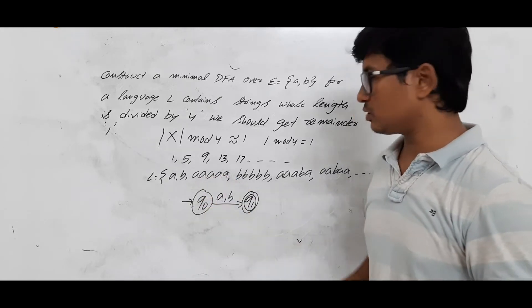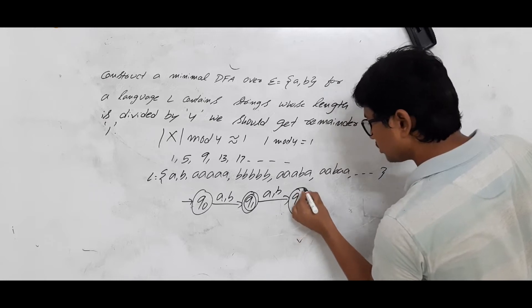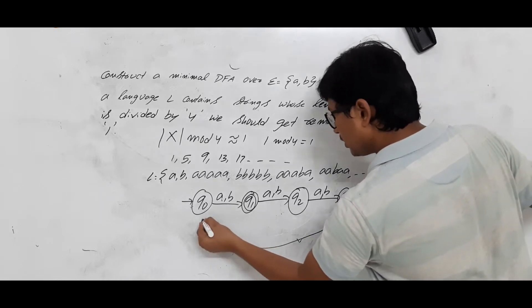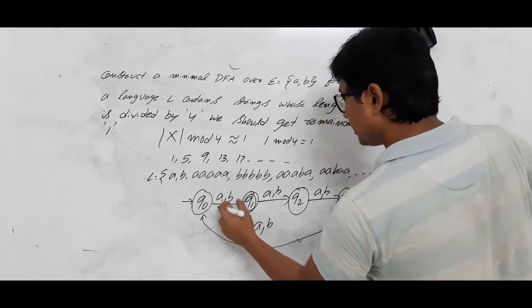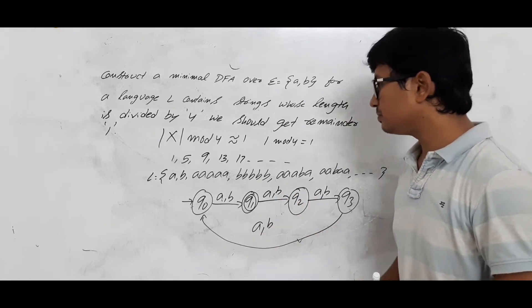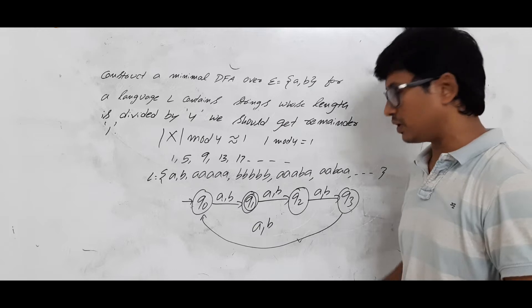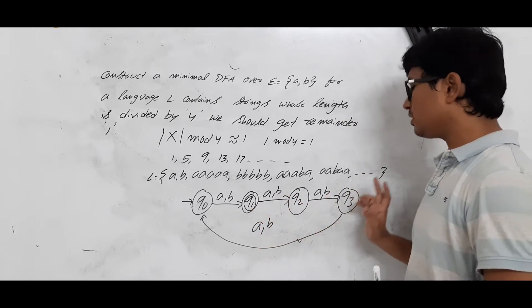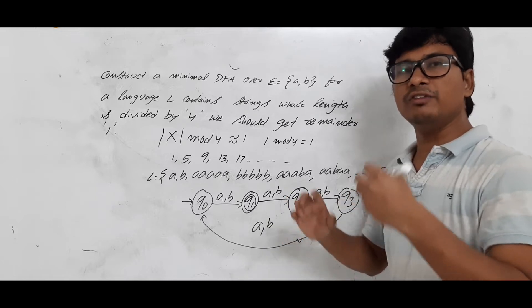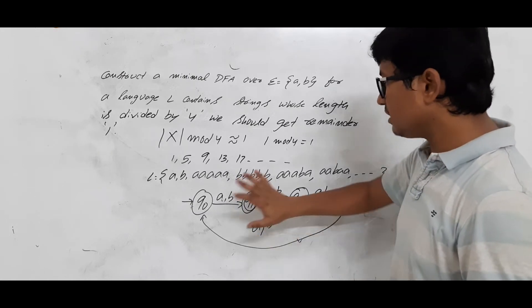For strings of length five, starting from q0 you go to q1 (length 1), q2 (length 2) — not accepted, q3 (length 3) — not accepted, q0 (length 4), then q1 (length 5) — accepted. Now checking completeness: from q0 on a and b we go to q1; q1 on a and b goes to q2; q2 on a and b goes to q3; q3 on a and b goes back to q0. Every state has a move on every alphabet, so this is a complete DFA.